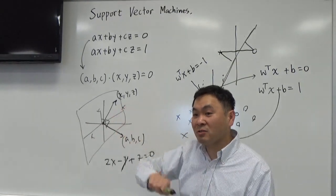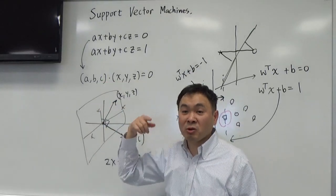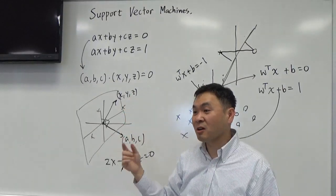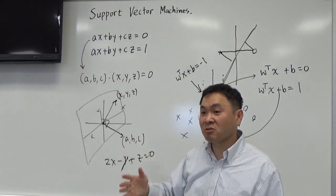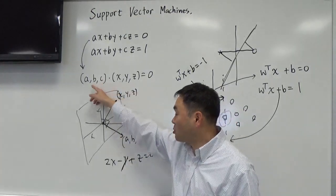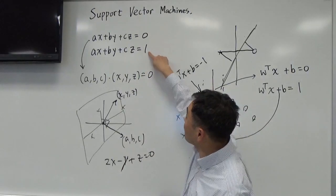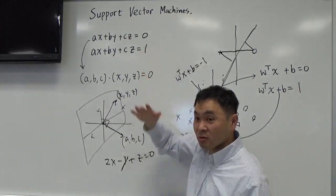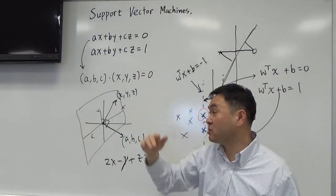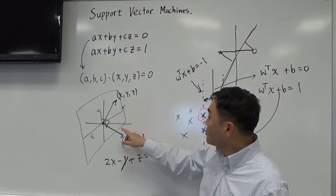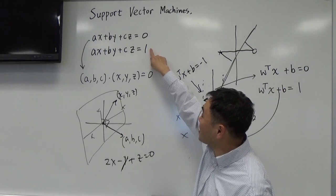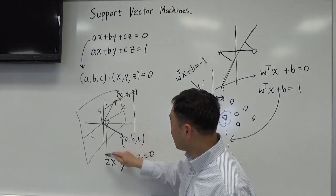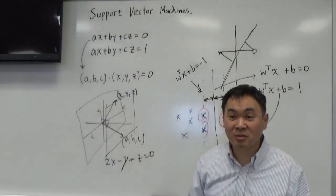In 3D, the a,b,c — which we were calling the weight vectors — control the direction of the plane. Just like in a 2D line equation there's the slope and the intercept, here you have the normal vector controlling the directions, and this extra term B giving the parallel translation. Now for the other plane WT X plus B equals one — that's just another plane shifted in some direction from the zero-plane.